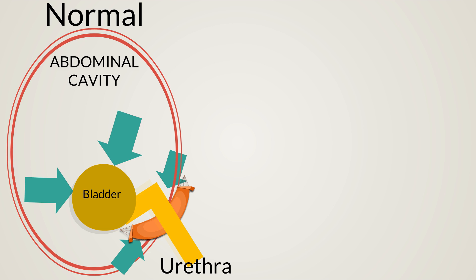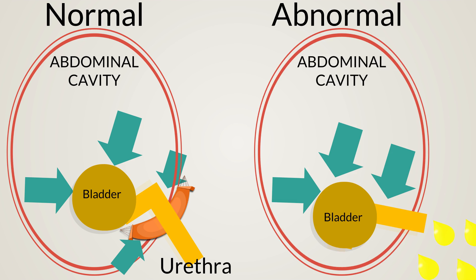To review: in women who are continent, increases in downward-directed pressure from cough, laugh, sneeze, or Valsalva maneuvers are countered by supportive tissue tone provided by the levator hammock. In those with an abnormally weakened supportive hammock, the downward forces are not countered, and this causes leakage.